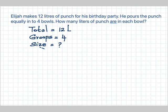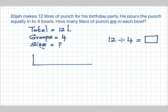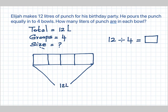How many liters of punch are in each bowl? 'Each' means we have to find the size of one group or the size of one bowl. Since we have to find the size, let's go for a division. Number sentence: 12 divided by 4 equals what? Let me draw a tape diagram with 4 partitions: 1, 2, 3, 4. We also know the total is 12 liters; what we don't know is the size of each group.